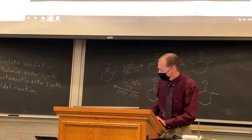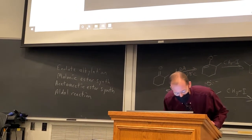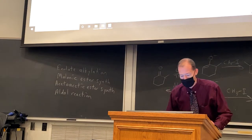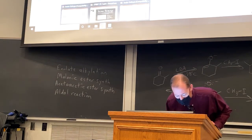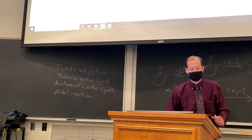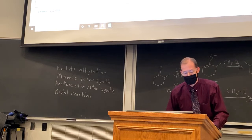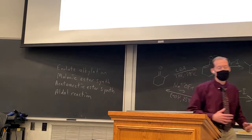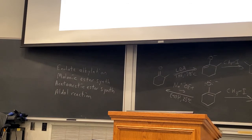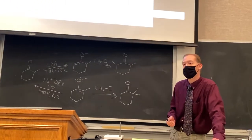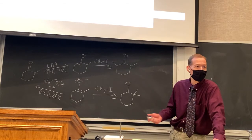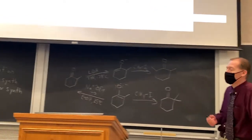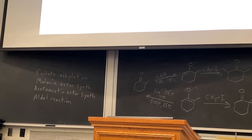We're going to continue our discussion of enolate alkylations, and then we'll talk about some related processes that solve some of the limitations of enolate alkylations that we'll learn about today. Those two processes are called the malonic ester synthesis and the acetoacetic ester synthesis, which are commonly used in multi-step syntheses. That's certainly something you could expect to see on an exam in a few weeks. And then we'll start chapter 24 focusing on the aldol reaction.